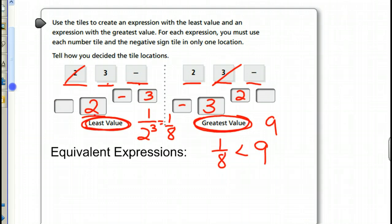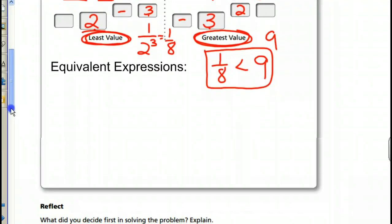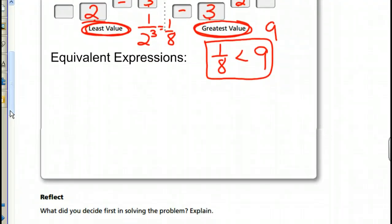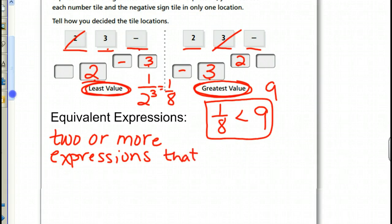We're using the same numbers, 2 and 3, and 2 and 3, and we are comparing how we can rearrange them and put them in different places to get them equivalent, less than, or greater than. So, equivalent expressions are going to be 2 or more expressions that are equal. And I'll give you an example.